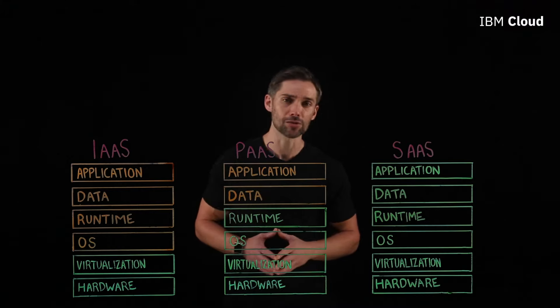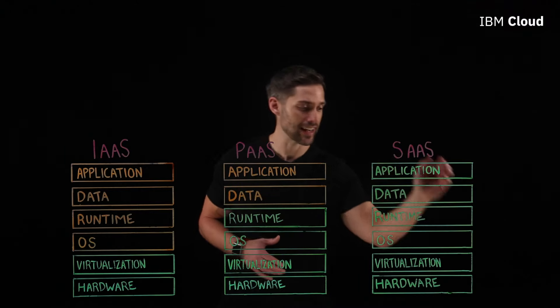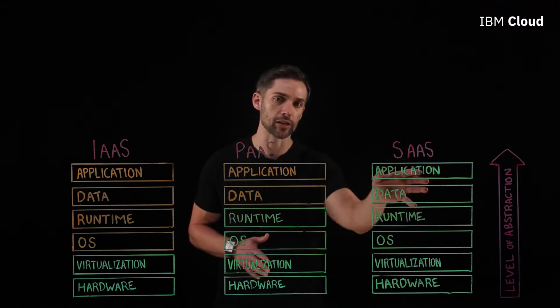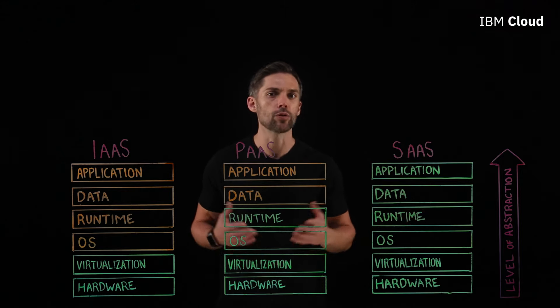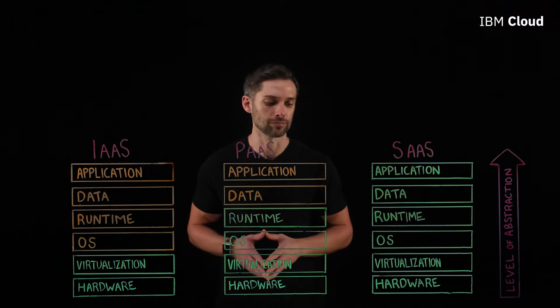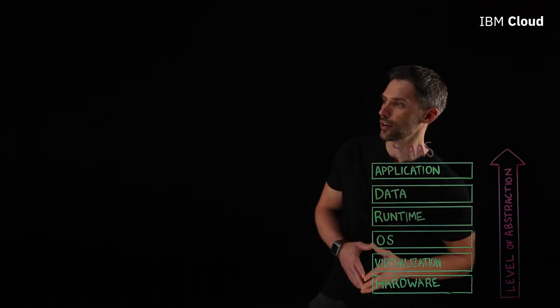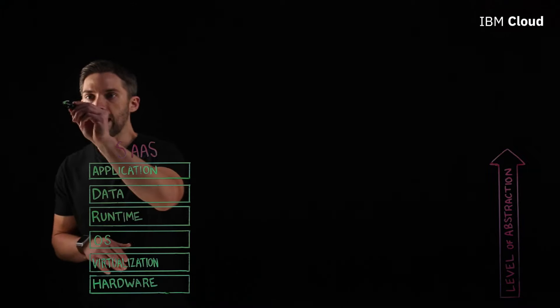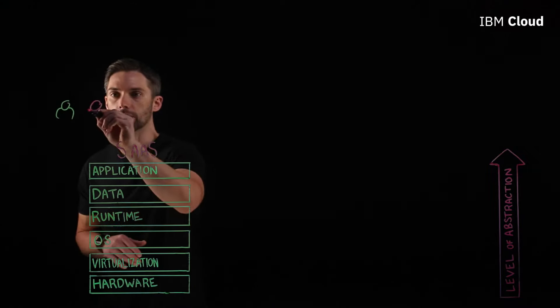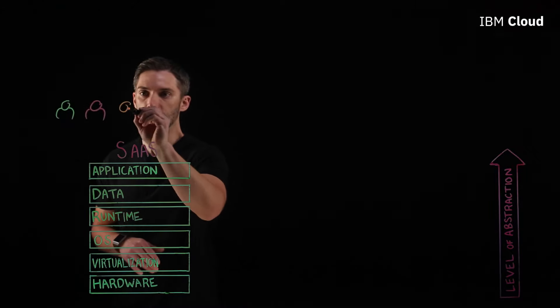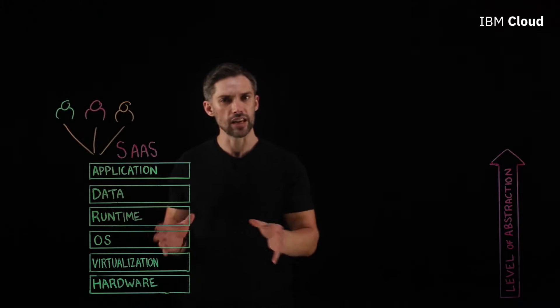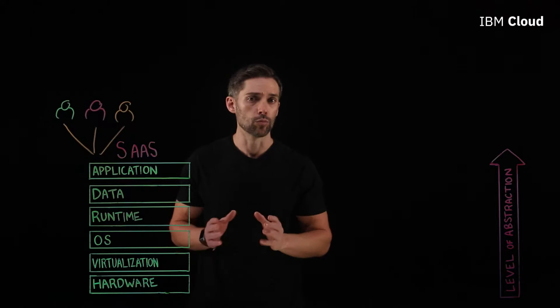Unlike our other cloud computing service models, SaaS sits at the very top of the IT stack and has the highest level of abstraction. This means the cloud service provider will be providing and maintaining all these layers in the stack for you. Users access a SaaS application within what we call a multi-tenant architecture — by tenant, I mean user — so you'd have multiple users all accessing the same pool of resources, with the same hosted servers, where each user has their own dedicated space to securely store their data.